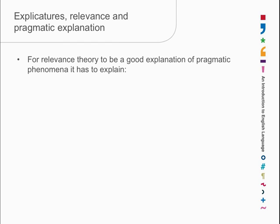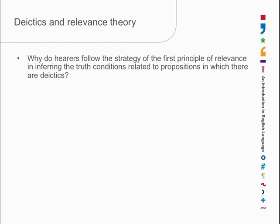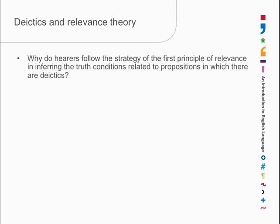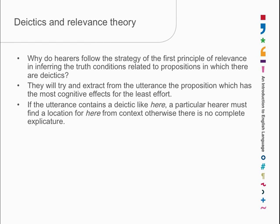I'm not sure whether that's entirely correct, but it's very plausible. So, let's see whether we can now do business with deictics, reference assignment, enrichment, disambiguation, and irony, among other things. Why do hearers follow the strategy of the first principle of relevance — that is, getting the most contextual effects for the least effort? They'll try to extract from the utterance the proposition which has the most cognitive effects for the least effort, and if an utterance contains a deictic like 'here', there has to be an inference as to where 'here' might be, because otherwise you can't give it a truth-conditional interpretation.